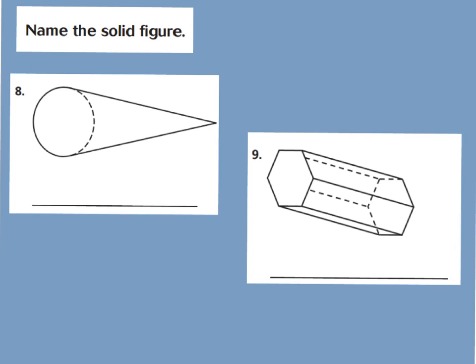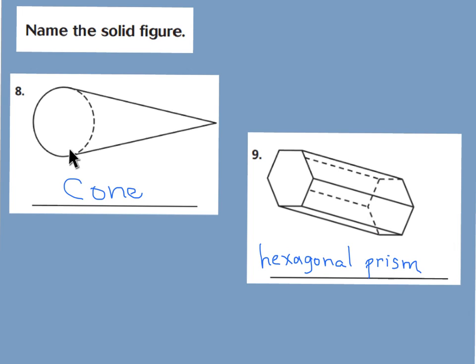Go ahead and press pause and write the names for questions eight and nine. For number eight, you should have said cone, because it has one circular base with one curved surface. For number nine, you should have said hexagonal prism, because you have two hexagon bases and six rectangular faces.